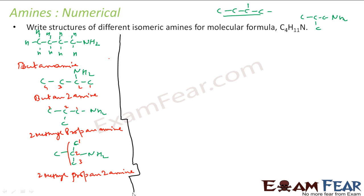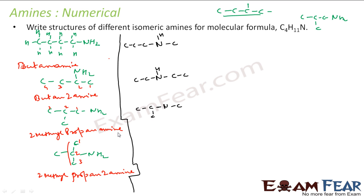Now let's draw secondary amines. I have a nitrogen with one hydrogen. I can put one carbon on one side and three carbons on the other — straight chain only, so that gives one structure. Another option is two carbons on each side. For the three-carbon side, I can also make it branched, giving a different style. So for secondary amines I have: one-and-three, two-and-two, and a branched one-and-three.